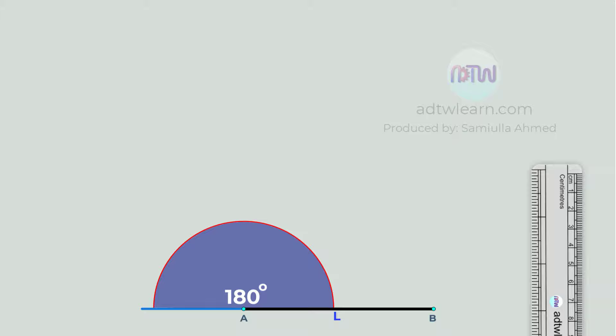This angle will be 180 degrees. Since we want to draw a heptagon, we need to divide this angle into 7 parts. Therefore, 180 divided by 7 will be equal to 25.714 degrees.